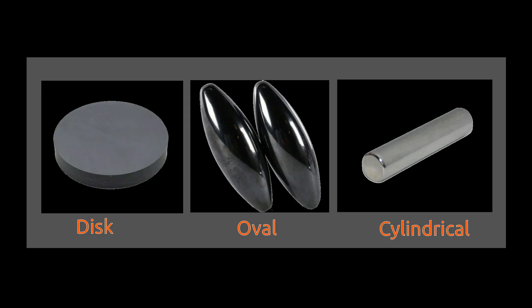Magnets can also be made in disc, oval, and cylindrical shapes. As you can see, there is a wide variety of artificial magnet shapes available.